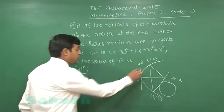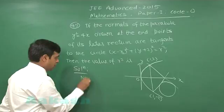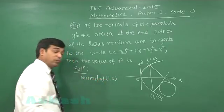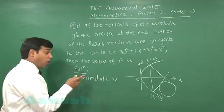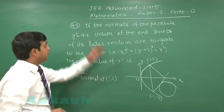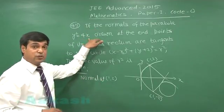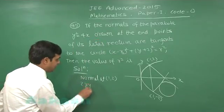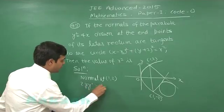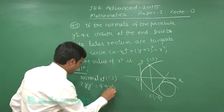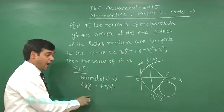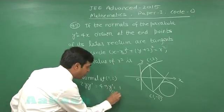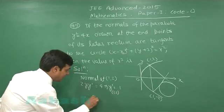Now moving to this normal part. Normal at (1, 2). We can simply write normal at this point by first finding the derivative so that we can get the slope of the tangent. 2y dy/dx = 4, or the derivative is 4/(2y), that is simply 1 because we are looking at the point (1, 2).